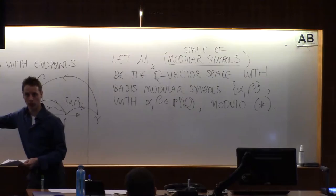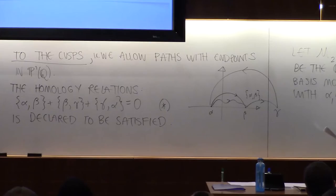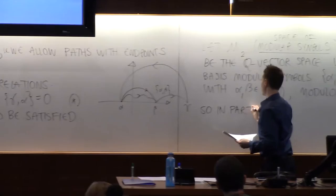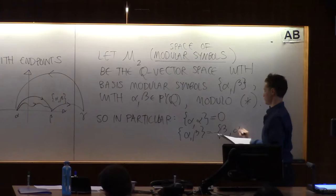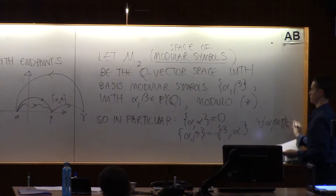You can always think about it as actual modular symbols, modulo relations like this. How big is this thing? It's an enormous vector space. Enormous. What else can you deduce from star? Well, I encourage you to conclude, to prove that for any alpha, I have alpha alpha equals zero, and alpha beta is minus beta alpha. See if you can prove that. That follows from star.